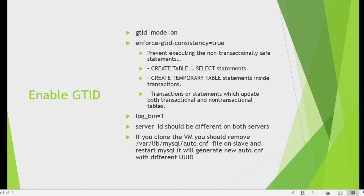To enable GTID replication, set gtid_mode=ON and enforce_gtid_consistency=ON. The enforce_gtid_consistency setting prevents executing non-transactional-safe statements such as CREATE TABLE ... SELECT or CREATE TEMPORARY TABLE inside a transaction. Binary logging must be enabled on the master, server IDs must be different on each server, and if you cloned a server you need to delete auto.cnf and restart to get a unique UUID.